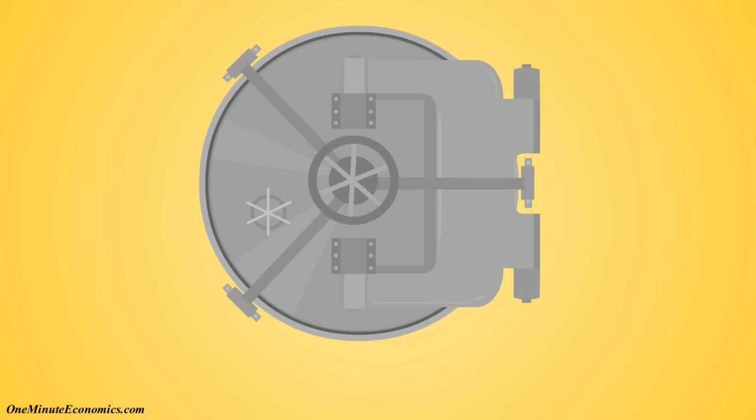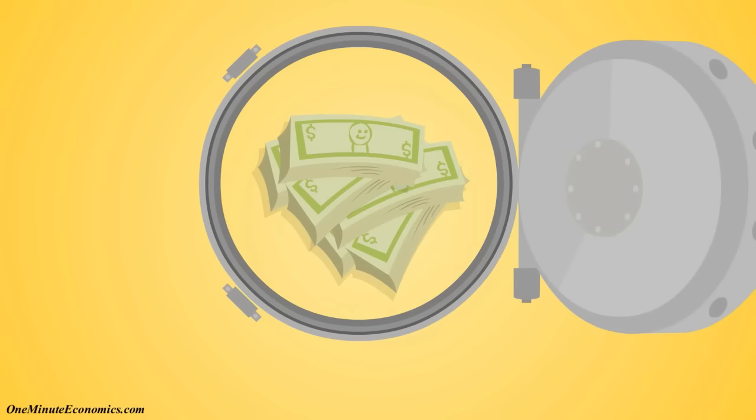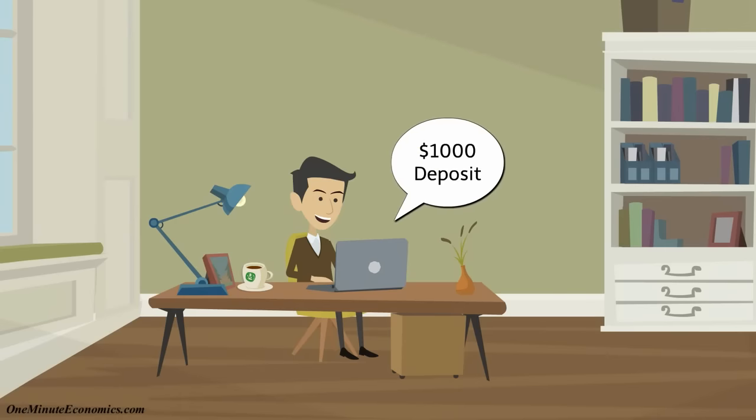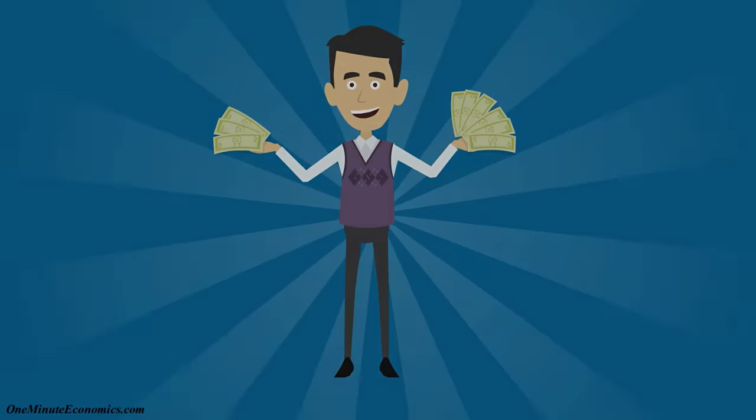John goes to his bank and deposits $1,000. John's bank keeps $100 and lends the remaining $900 to Mike. There is now $1,900 in the financial system: John's $1,000 deposit and Mike's $900 loan.